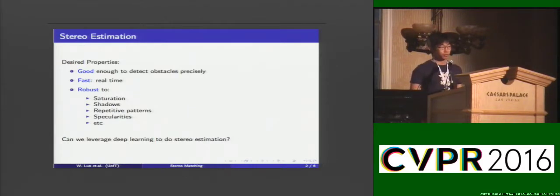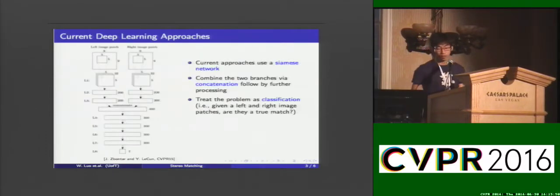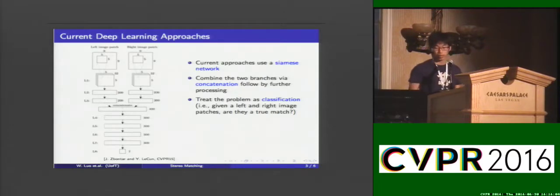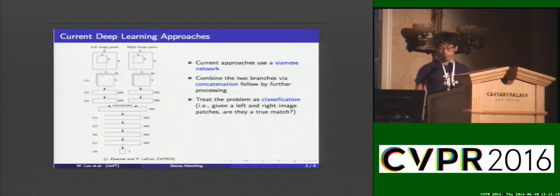Recently we have seen deep learning perform very well on high-level semantic tasks like detection. So what about low-level tasks such as stereo? At last year's CVPR, Zbontar and LeCun proposed a simple Siamese network that takes as input two image patches extracted from left and right images. They use convolutional layers to compute the feature representation of each image patch and fully connected layers on top to compute a similarity score. They treat it as a binary classification problem, and the network is trained to compute the similarity score of two image patches.